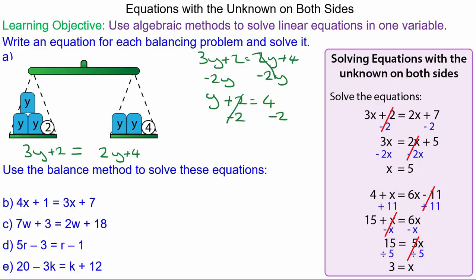2 take away 2 equals 0. So y equals 4 take away 2, which is 2.